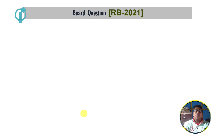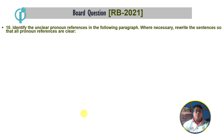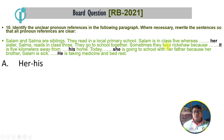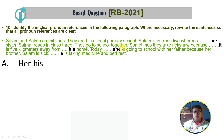Now we have to work on a question. I'll explain the statement. We are going to identify unclear pronoun references in the following paragraph, which is necessary. We write the sentence so that all the pronoun references are clear. In this example: Salam and Salma are siblings. They read in a local primary school. Salam is in class 5, whereas her sister Salma reads in class 3. They go to school together. Sometimes they take a rickshaw because it is 5 km away.